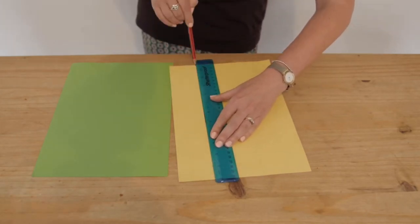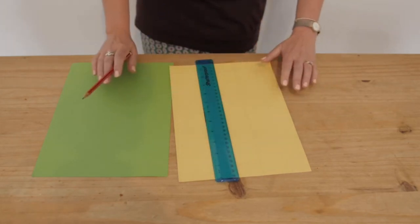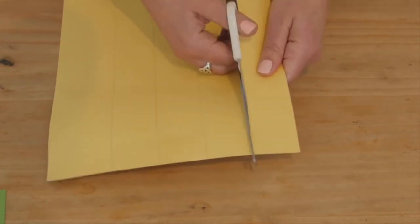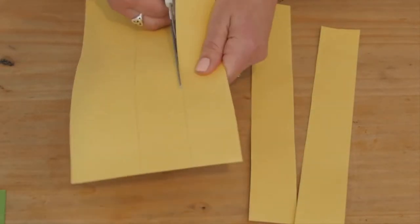We will do this with the other paper as well. Next you need to carefully cut along the penciled lines until you have four equal strips.